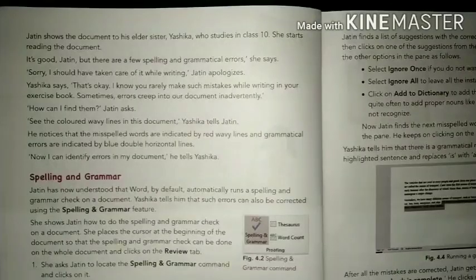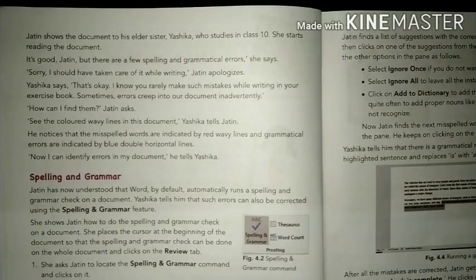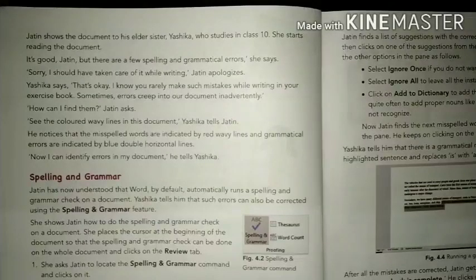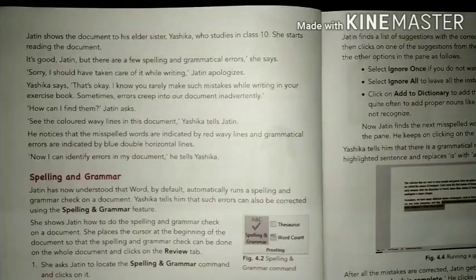When you have any information typed in your Word document, if you have a spelling mistake, a red wavy line appears. And if there is a grammatical error, Word shows a blue double horizontal line. So red wavy line indicates a spelling error, and blue double horizontal line indicates a grammatical error.